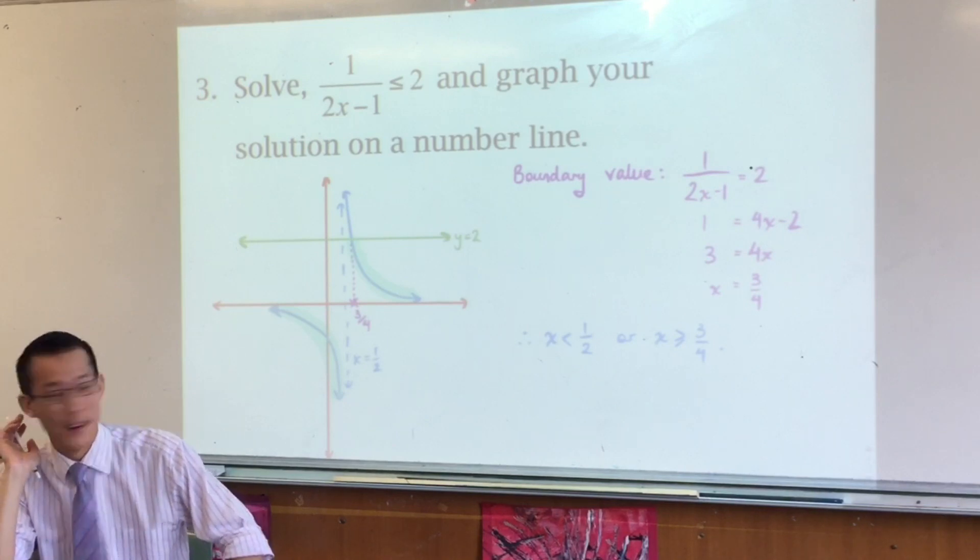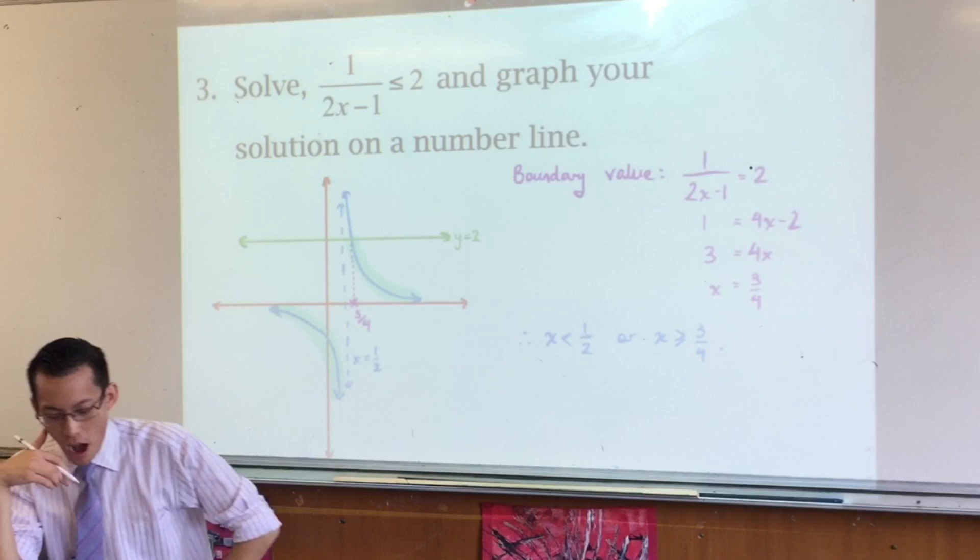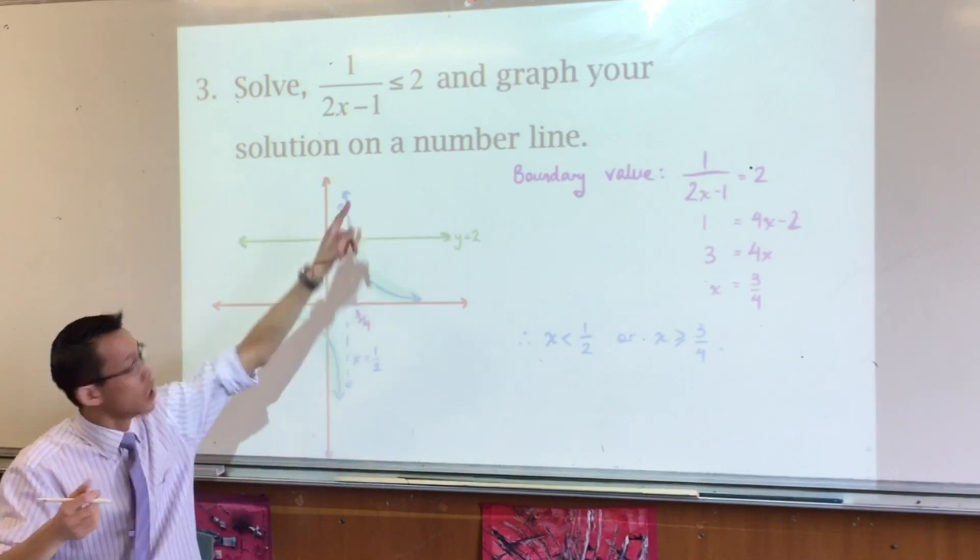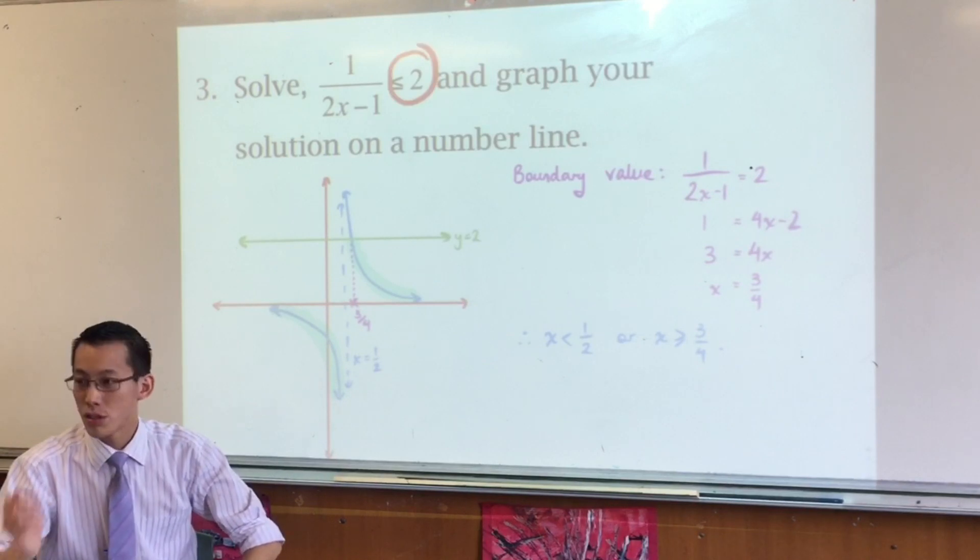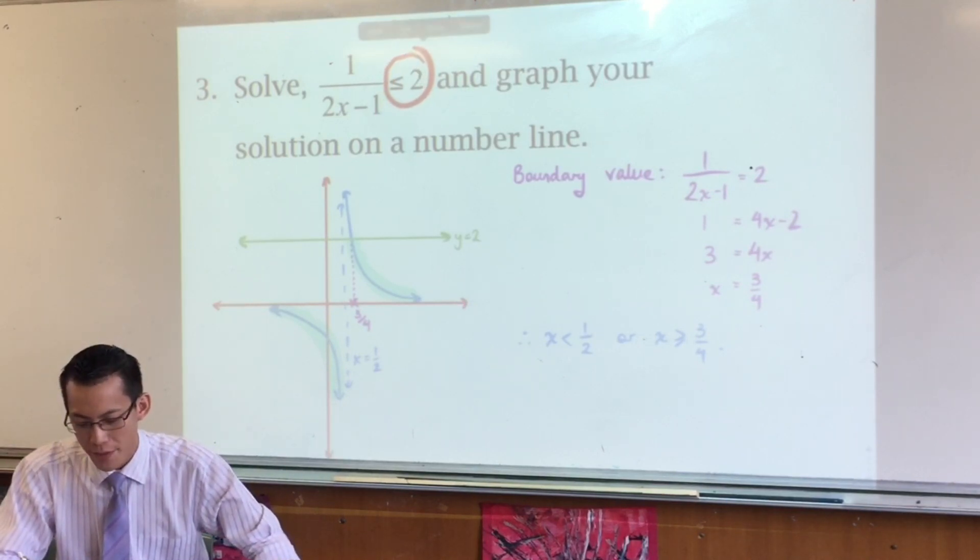1 over 2x minus 1. That's this hyperbola here. That's what it looks like. I want to know where is the hyperbola below 2. That's what it means. Or equal to.